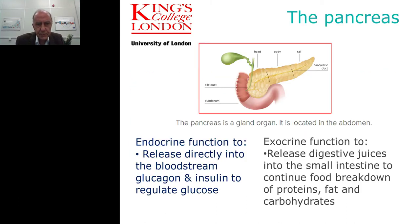The pancreas itself is a glandular organ located almost centrally within the abdomen, and it can be divided into head, body and tail. Its function can be divided into two parts: the endocrine function, which is the regulation of glucose by the bloodstream and insulin, and the exocrine function, which is to release digestive juices into the small bowel via the pancreatic duct. These pancreatic juices continue the breakdown of food which started in the stomach into parts that can be absorbed, such as proteins, fats and carbohydrates.